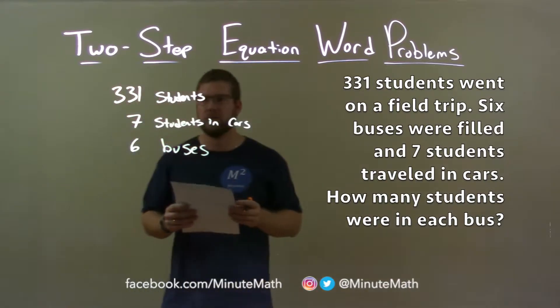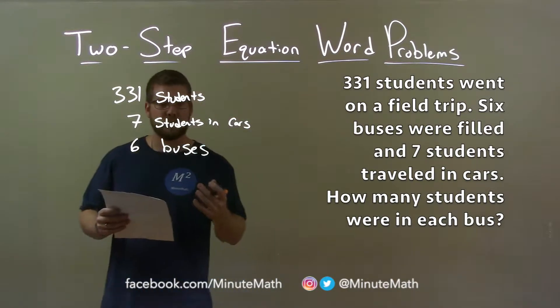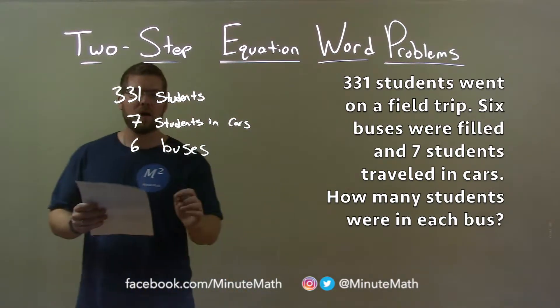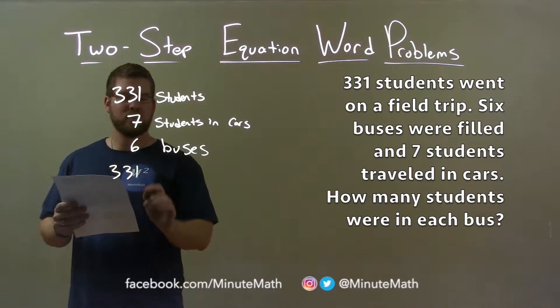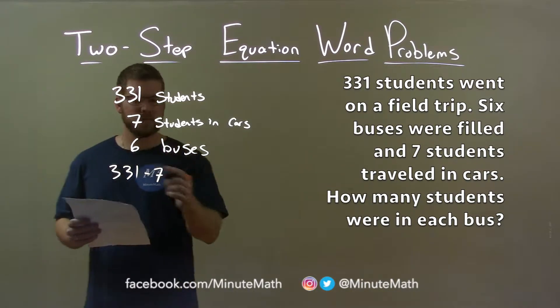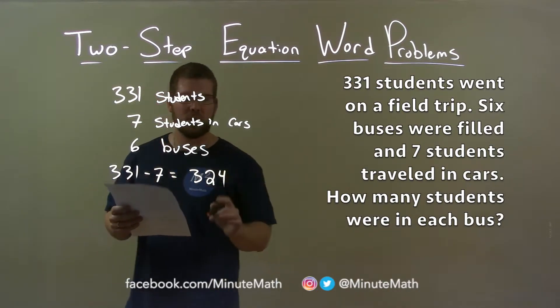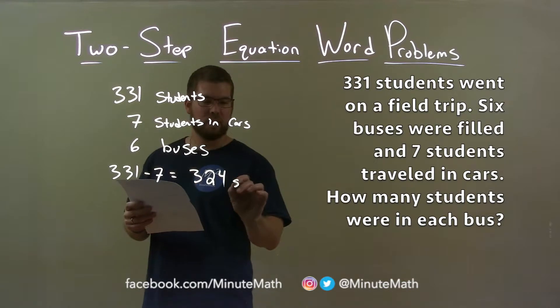We have six buses here, so what we want to do is see how many students traveled in the buses. If we have 331 students total, and seven traveled in cars, we take 331 subtract seven from that, we have 324 students left over, students in buses.